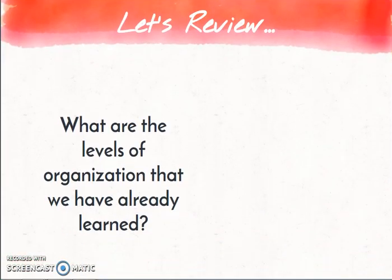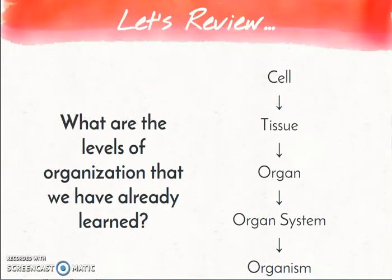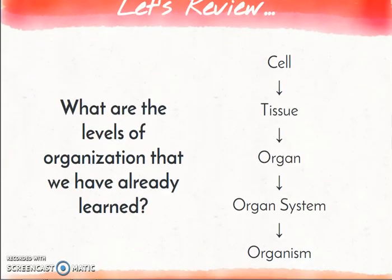Let's review what we've done up to this point. We've already talked about cells and how cells are organized within an organism. The levels of organization we've already learned are: cells grouped together to make tissues, tissues group together to make organs that have a specific function, organs with similar jobs group together to make an organ system, and organ systems work together to make an organism function. Once you get to the level of organism, we have the piece of the puzzle that works towards ecology or ecological relationships.